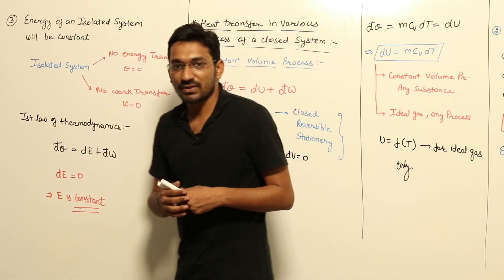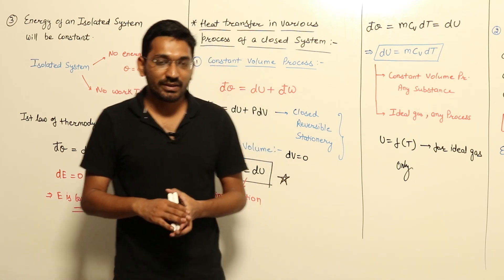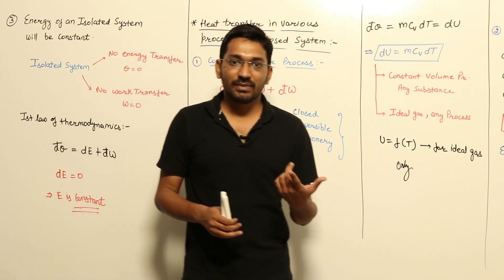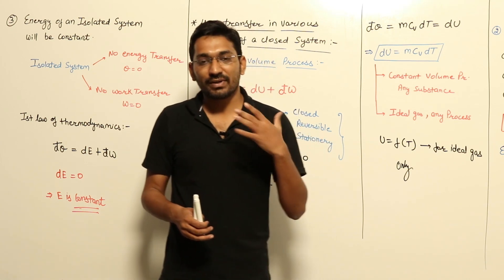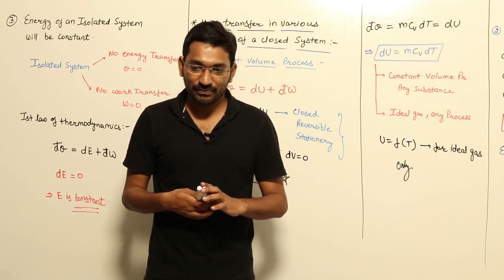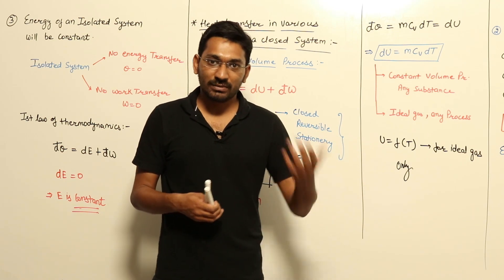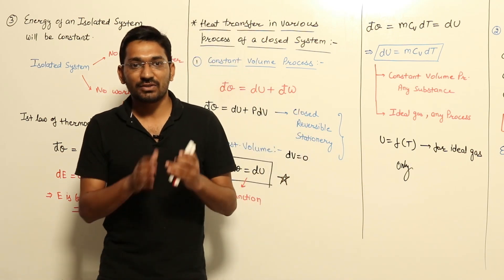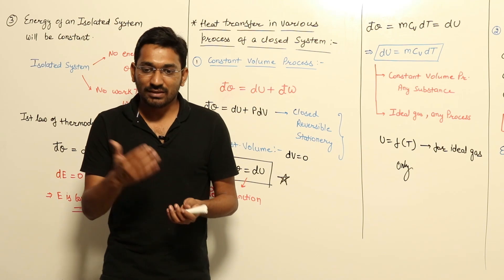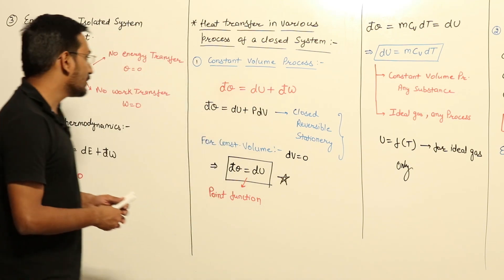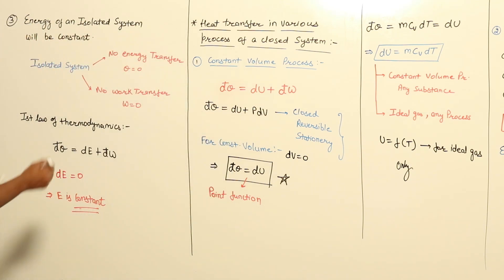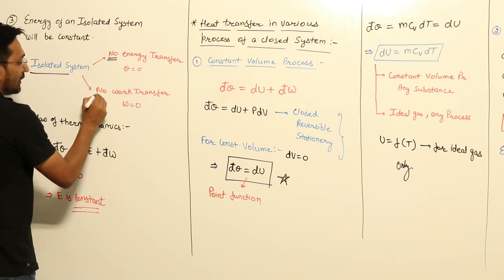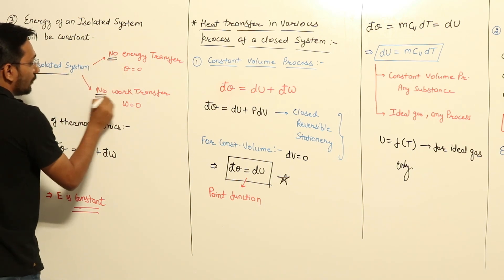What is an isolated system? There are three types of systems. An open system, in which both mass transfer and energy transfer can take place. Another one is a closed system, in which only energy transfer can take place — no mass transfer. And the third one is your isolated system, in which there is no energy transfer and there is no work transfer.